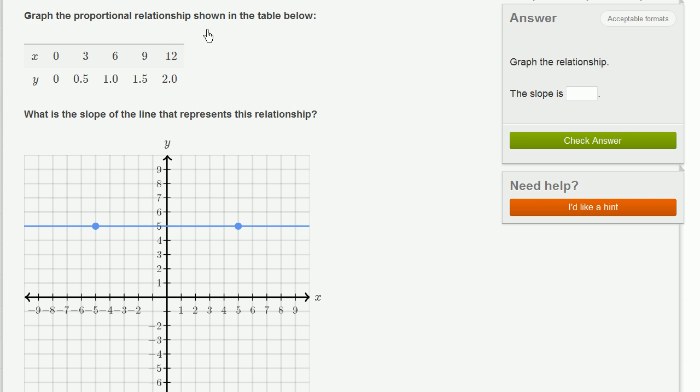We're asked to graph the proportional relationship shown in the table below. They give us a table of x values and the corresponding y values. We see when x equals 0, y equals 0. Then they give us other points: when x is 3, y is 0.5; when x is 6, y is 1, and so on.